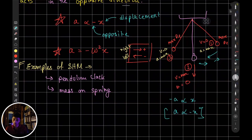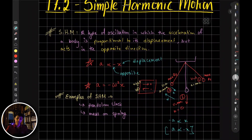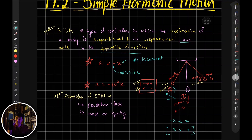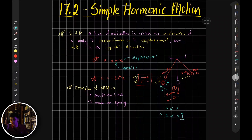For position 3, the acceleration is going to be in the rightward direction, but the bob is displaced left of the equilibrium. So acceleration is in one direction and displacement is in the opposite direction. It is indeed true that the acceleration and displacement are in opposite directions. So we know the acceleration and displacement are proportional, but in opposite directions.